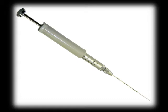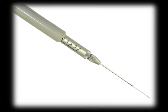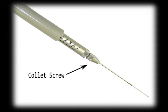A micropipette has several parts: a handle, a movable barrel with preset volumes, a plunger, a collet screw, and a capillary tube.